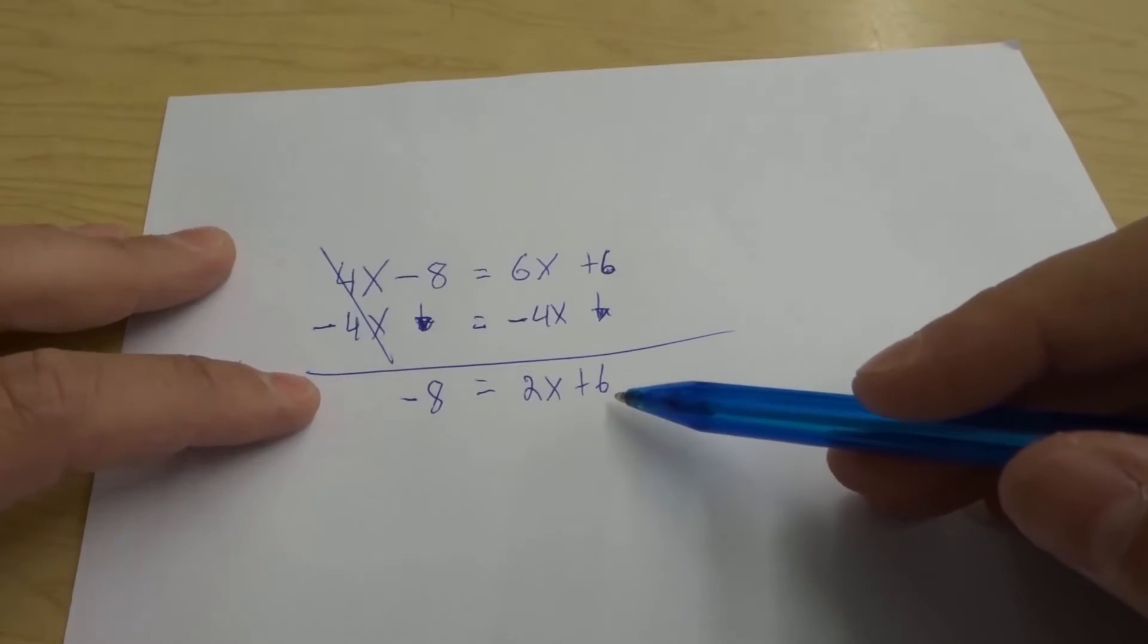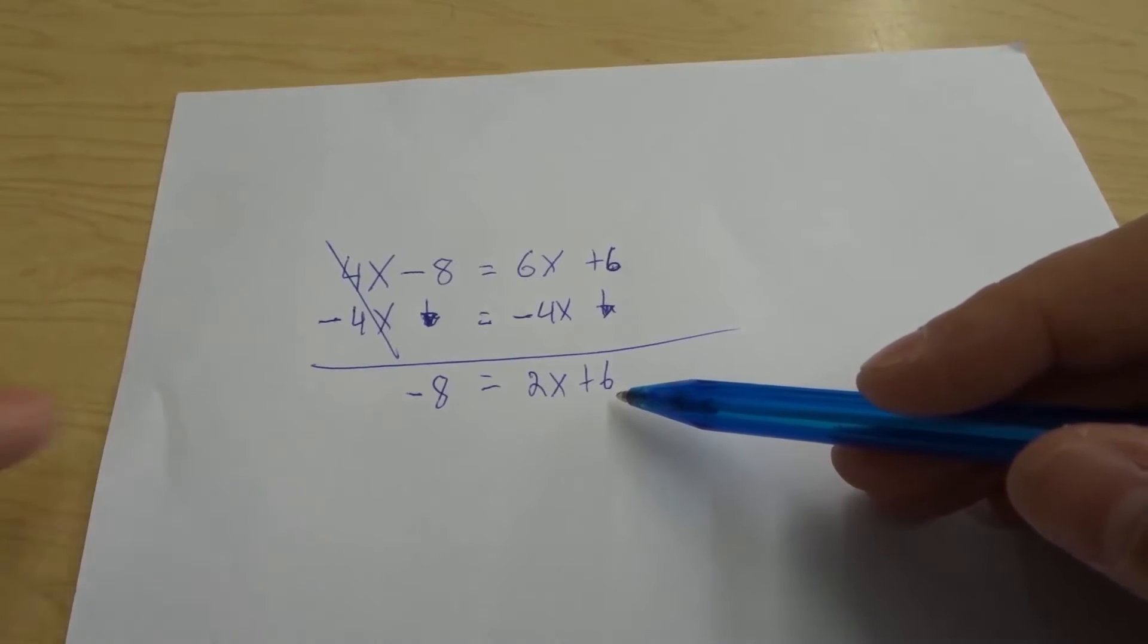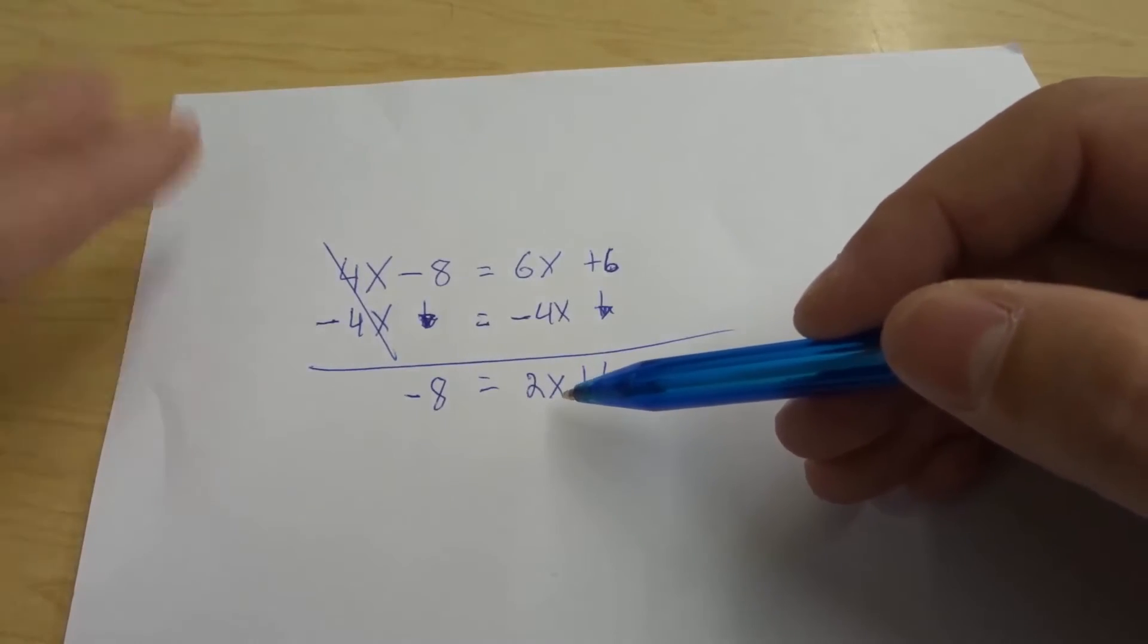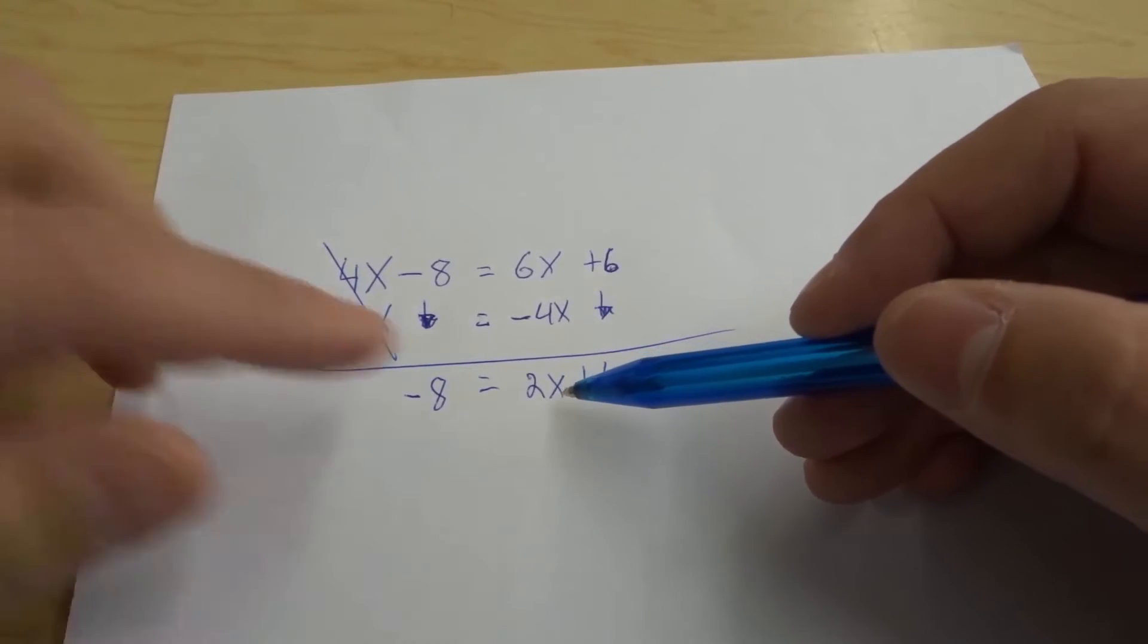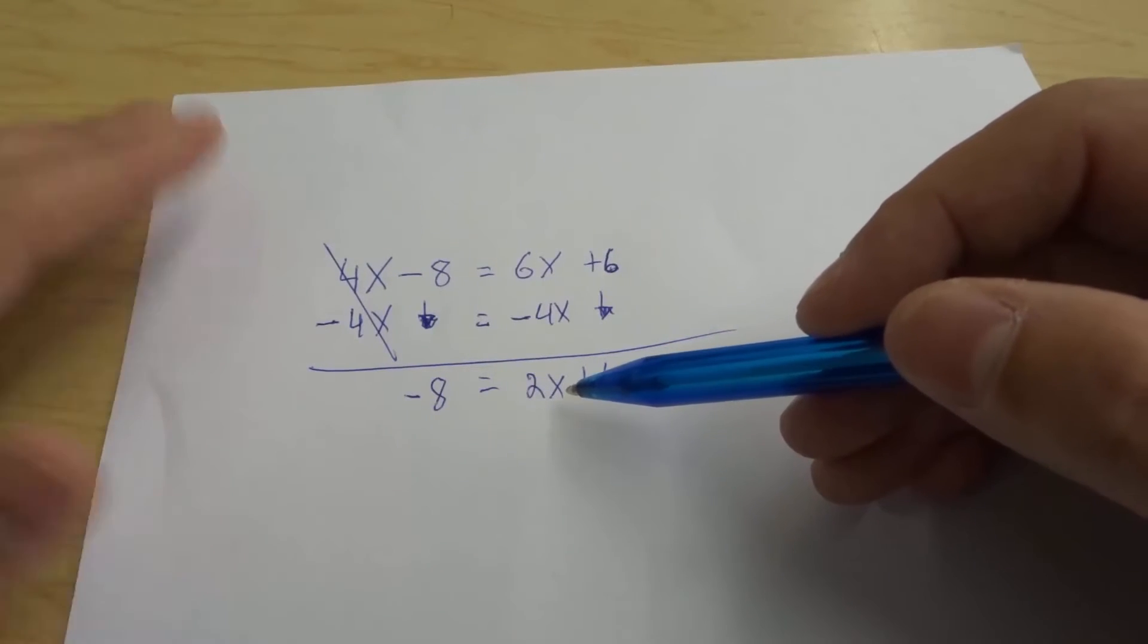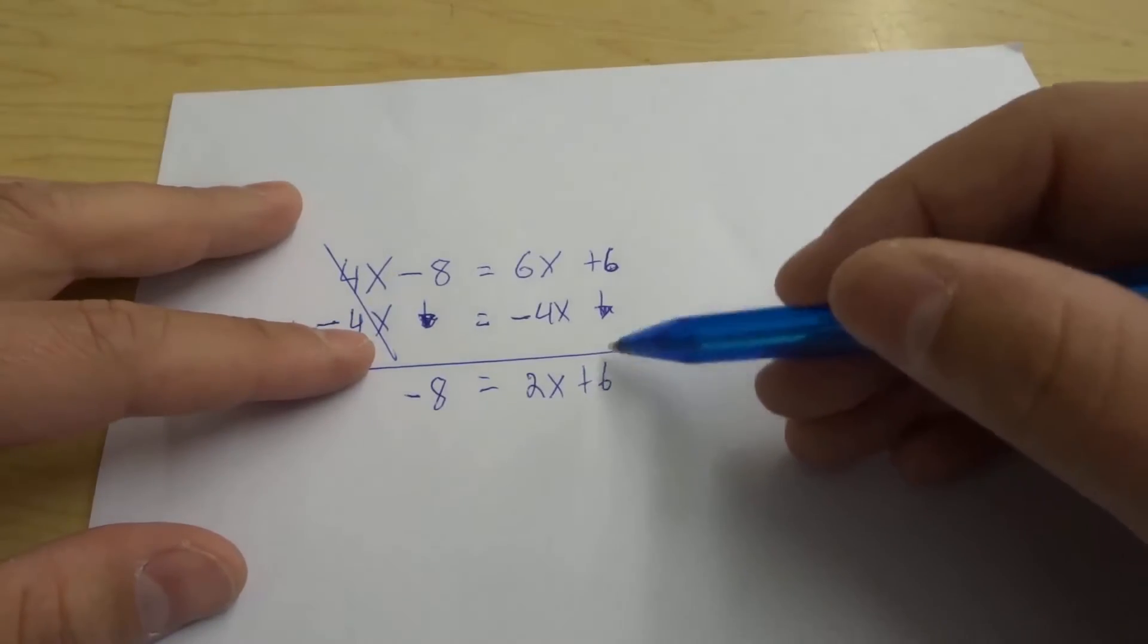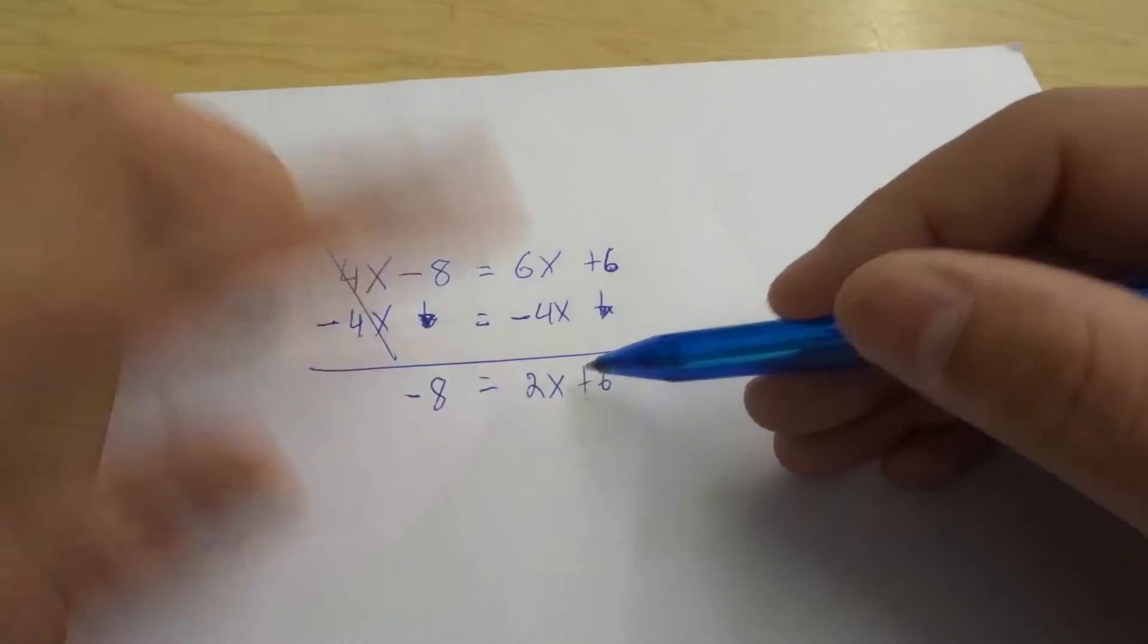So now what we want to do is we want to isolate the variable. So what we need to do here is we're going to try and get the 2x alone on one side and then that will convert to just the x alone on the other side so we'll know how to solve the equation. So we need to get rid of the plus 6 over here to isolate just the 2x.